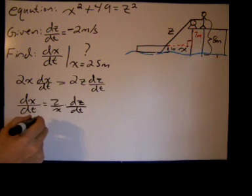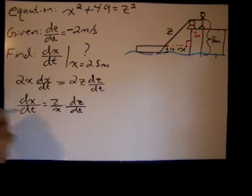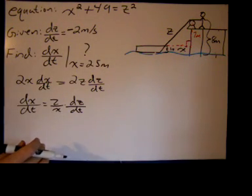I have a value for dz/dt. I have a value for x. It's x squared. I mean, it's 25 feet. And I just need a value for z, and I can solve this problem. Well, we can get our value for z by just solving for our, going back up into our equation with the Pythagorean theorem.